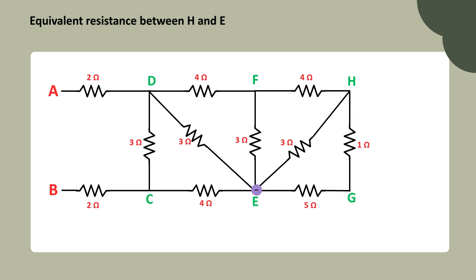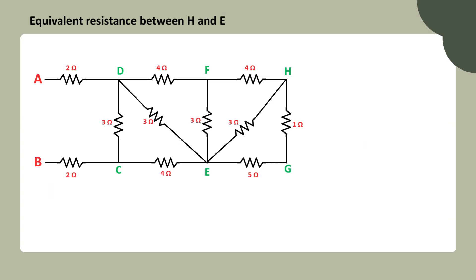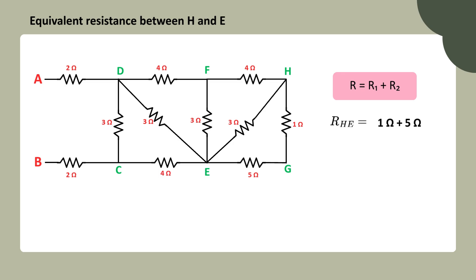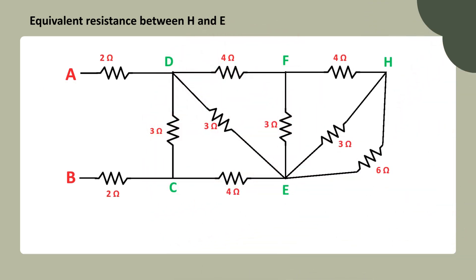First, observe the current flow between the 1 ohm and 5 ohm resistors. The same current passes through both, which means they are connected in series. When resistors are connected in series, we find the equivalent resistance by simply adding their values. So, 1 ohm plus 5 ohms equals 6 ohms. Let's simplify the circuit by replacing the 1 ohm and 5 ohm resistors with a single 6 ohm resistor.